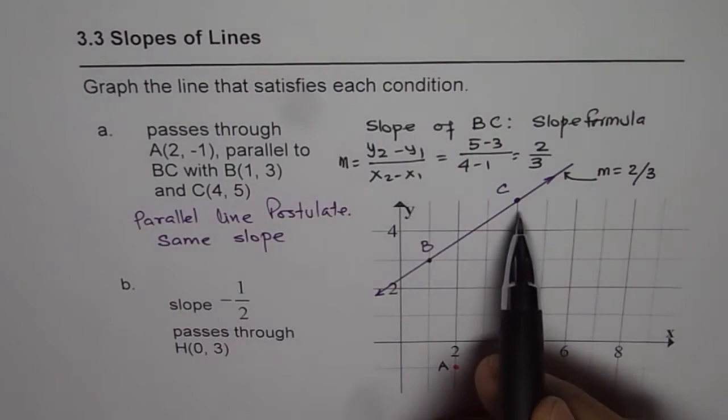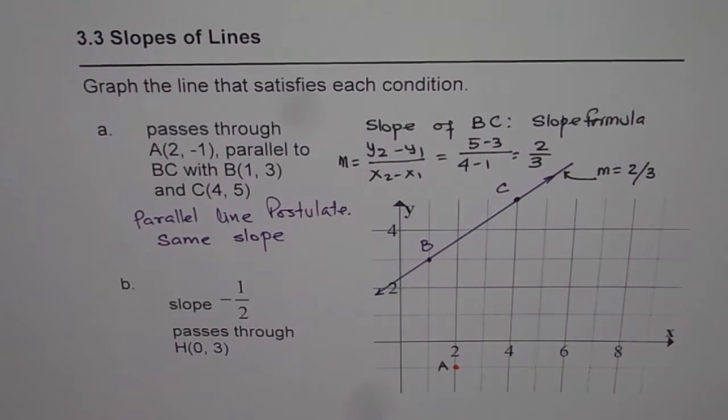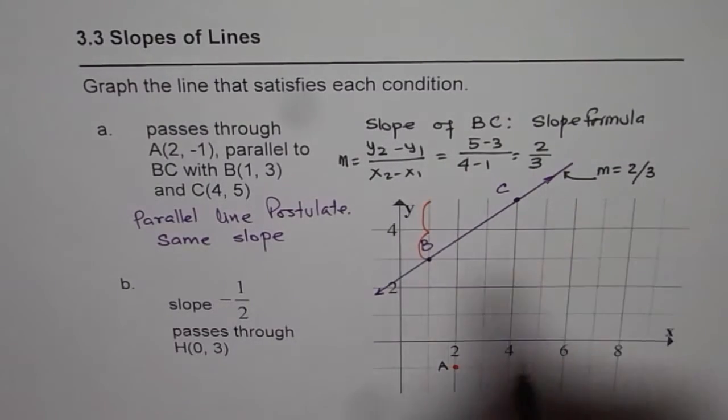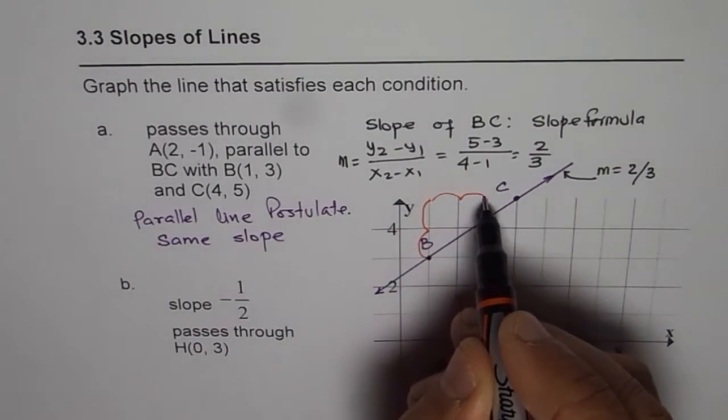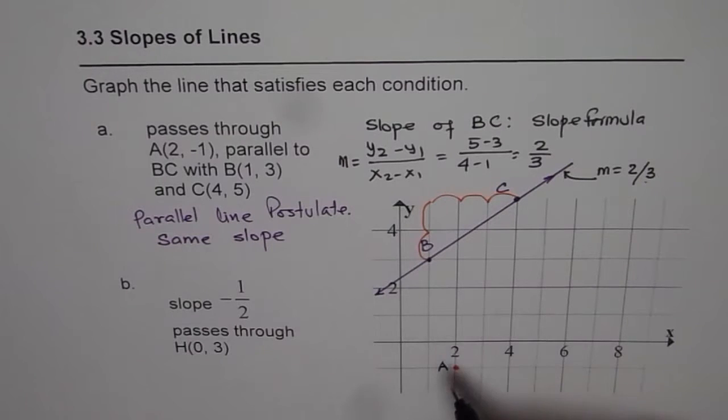You can also find this from the diagram itself. If you go from B to C, the rise is 2 and the run is 3, giving 2/3. We will apply this strategy to sketch the second line.